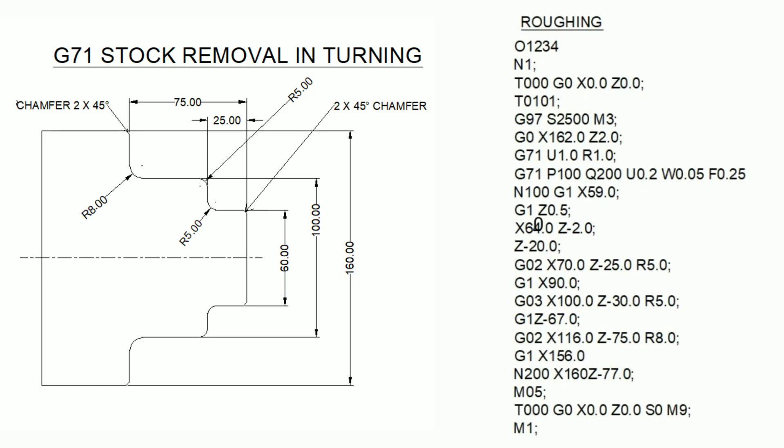This completes the chamfer. Then M05 — spindle stop. Return to reference point: T0000, G0 X0.0 Z0.0. S0 — spindle speed zero. M9 — coolant off. Finally M1 — optional stop; the machine will stop after reaching M1.